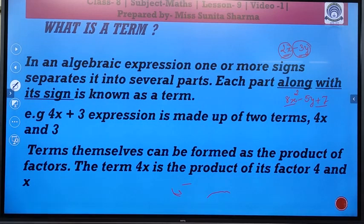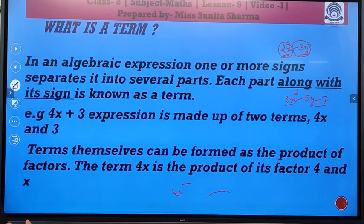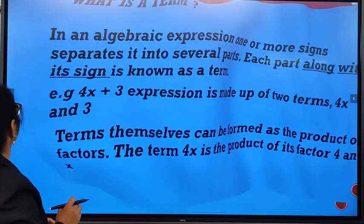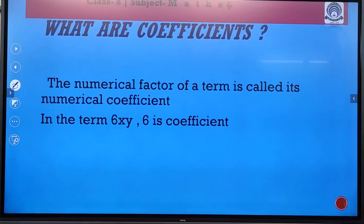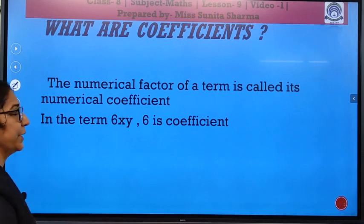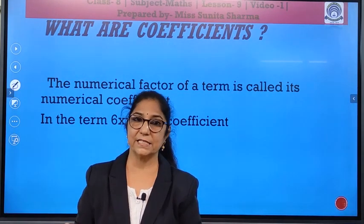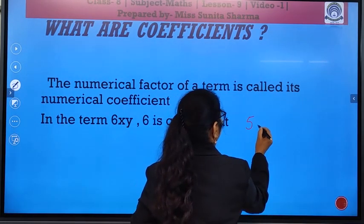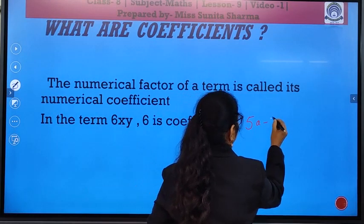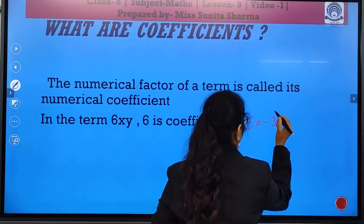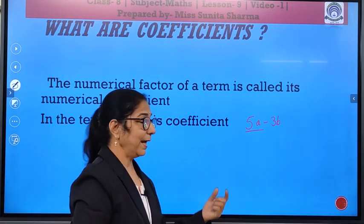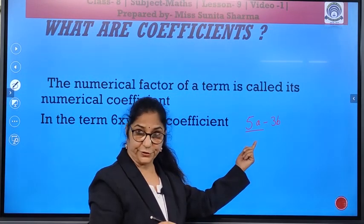Now, terms themselves can be formed as the product of factors. That is, the term 4x is a product of 4 and x. Then, let us see what are coefficients. Now, the numerical factor of a term is called its numerical coefficient. Or, you can even say coefficient. Like, I give you 5a minus 3b.